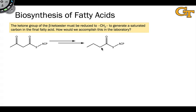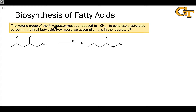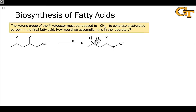If our goal is to end up with a saturated carbon chain, we have to reduce the oxidation level of the ketone carbon to a CH2 group. Note that this is reduction — the replacement of two carbon-oxygen bonds with two carbon-hydrogen bonds.